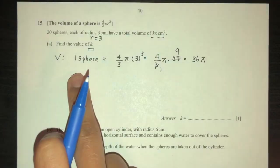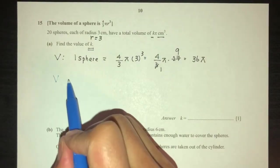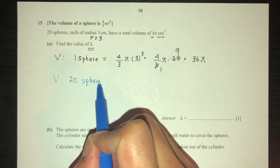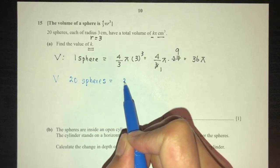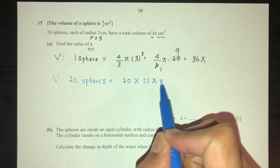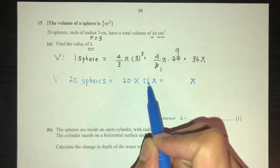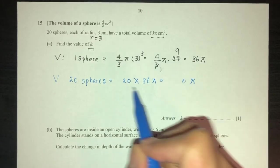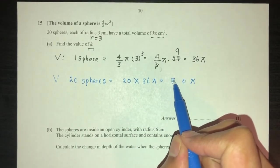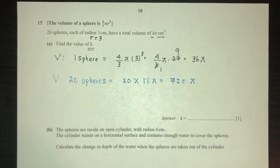But now, we have to find the volume of 20 spheres. Volume of 20 spheres, you have to multiply by 20. So, 20 multiplied by the volume of 1 sphere, you will have pi will be pi. This will be 0, and then 36 times 2, that will be 7, 2. So that is the volume of 20 spheres.